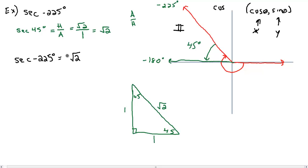Cosine is negative in the second quadrant, so our answer is going to be negative square root of two. To recap: first, draw your angle of rotation and find the reference angle — the number of degrees from the terminal side to the closest x-axis, which is 45. Set up the 45-45-90 special right triangle, find secant of 45 as the square root of two, then determine the sign by using cosine-theta comma sine-theta matching with x and y, and checking which quadrant the terminal side is in.